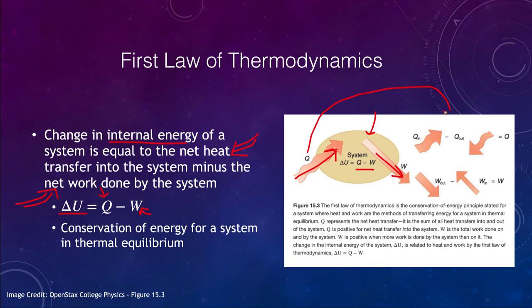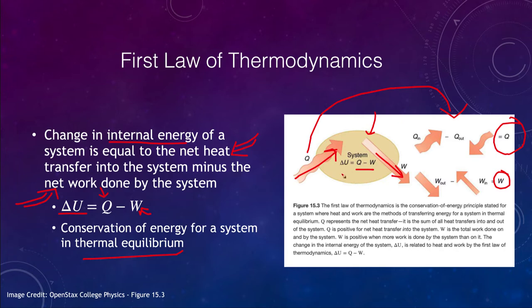Q itself is equal to the difference between heat in minus heat out, so the net heat is what we are looking for. There will be work out and work in, and again it is just the net work that we are looking for. This is essentially a statement of conservation of energy, and if the system is in thermal equilibrium then energy is conserved.